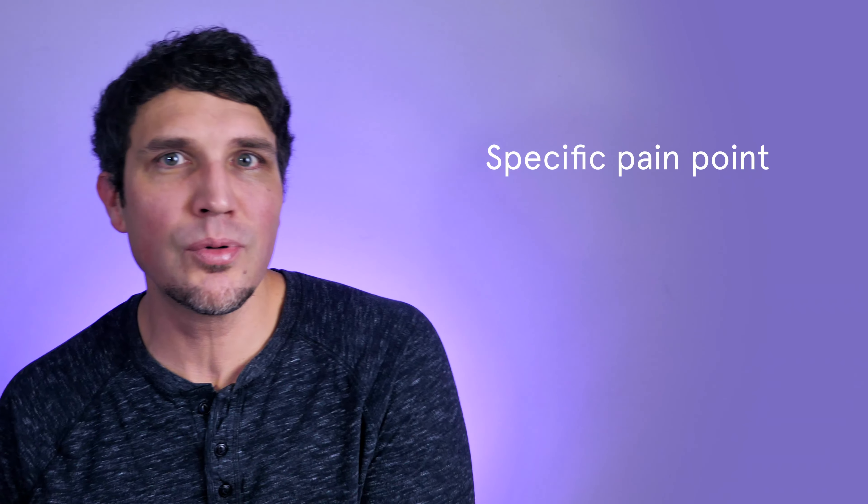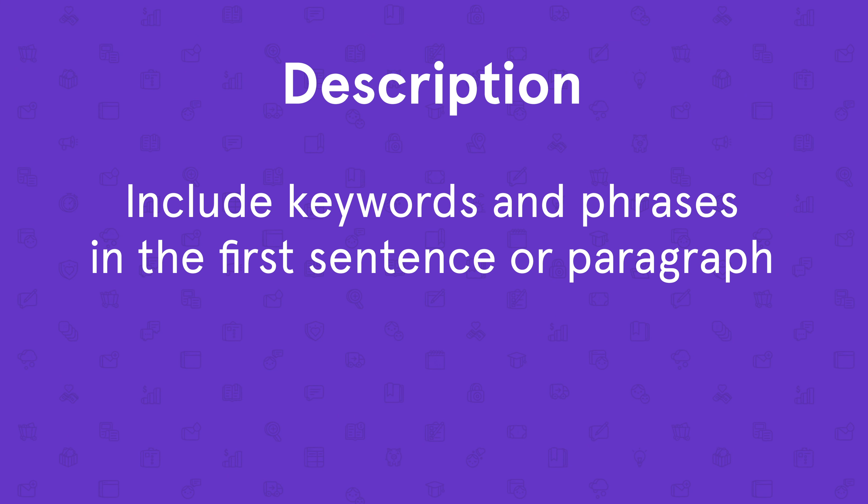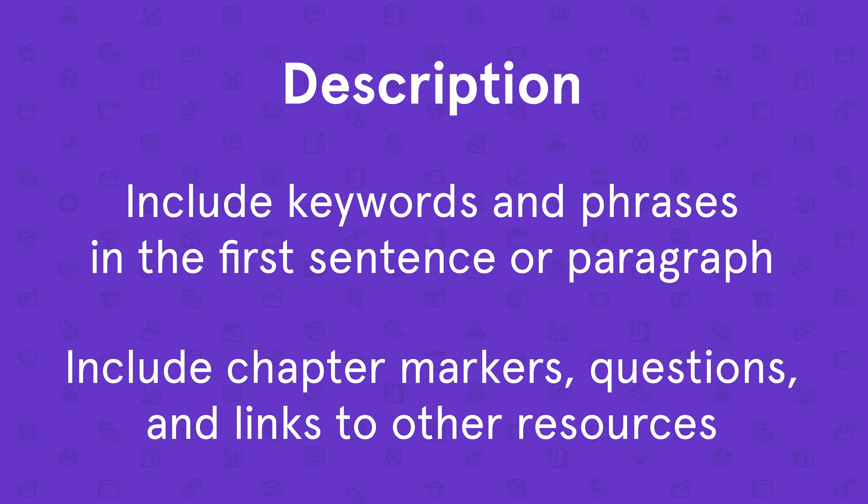A string of keywords as a title doesn't mean as much to someone who's searching as addressing a specific pain point, identifying a negative feeling, or promising a desired outcome. You want to combine keywords that will help YouTube understand how to categorize your content with language that will appeal to your target audience. For your description, you'll use the same principles as your title but in an expanded format. Be sure to include your keywords and phrases in the first paragraph and even in the first sentence if possible. The description is also a great place to add chapter markers, ask questions, and link to additional resources.